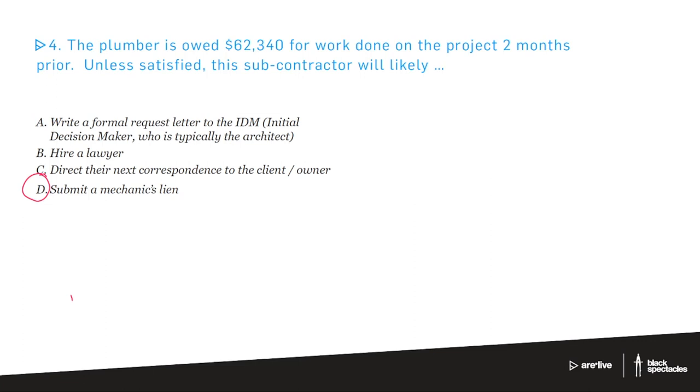Well, what you essentially do, what a mechanics lien is, is that the plumber goes to whatever county or municipality, the place in that state where these things are done. And they effectively say that they are claiming a percent of ownership of this piece of property and the work that's going on there. So they are owed $62,340. So if this whole site is worth $2 million, then they say, okay, we are claiming the percent that would be $62,000 over $2 million. We're claiming that percent of ownership of this site because we have not been paid. And that goes into and lives with the deed of the site.